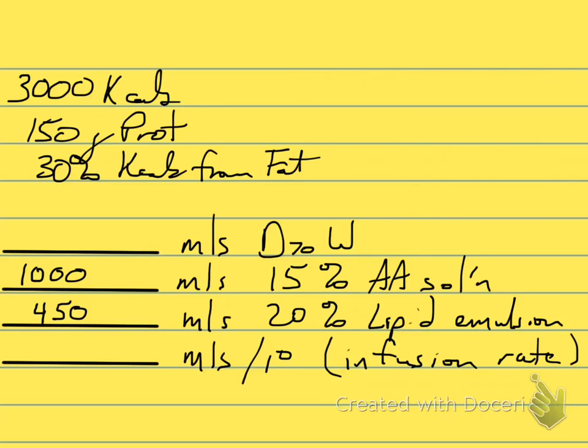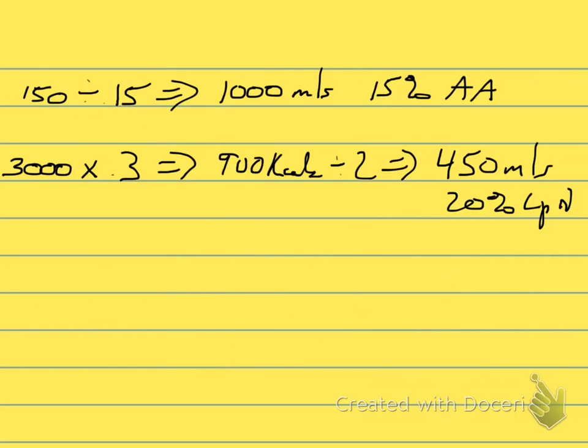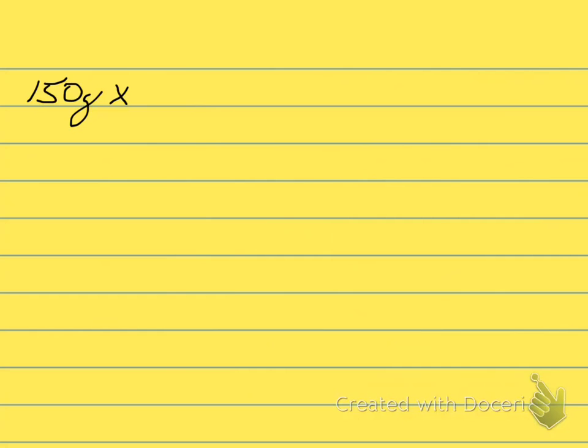The next thing we need to do is determine the amount of glucose — this is a bit more involved. First, we need to see how many calories we have left. We know we decided on 150 grams of protein, and there are 4 calories per gram of protein, so multiplying gives us 600 calories coming from amino acids.